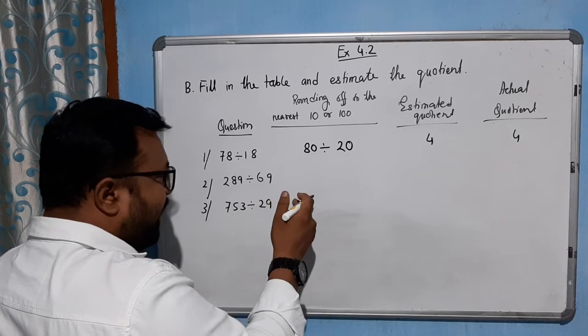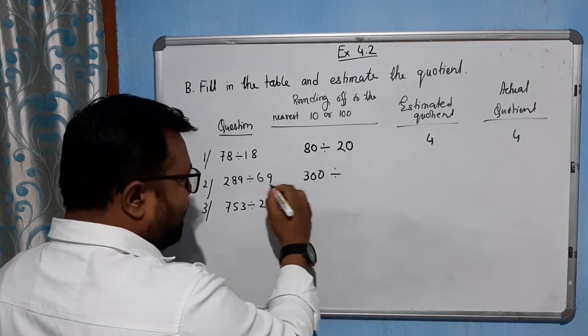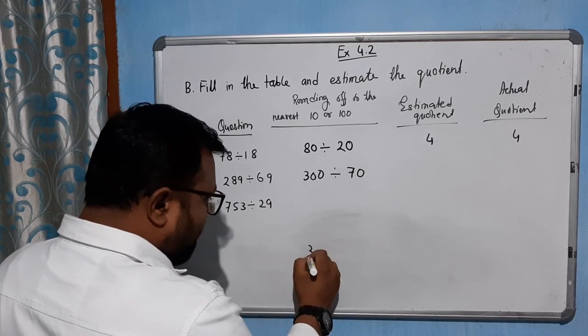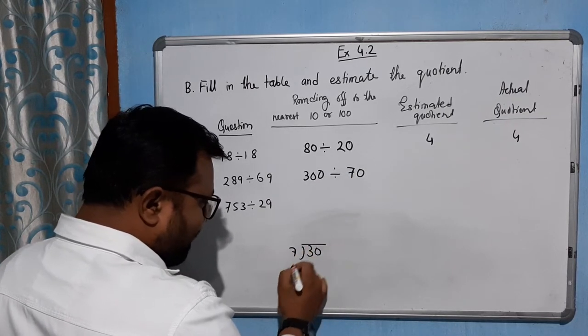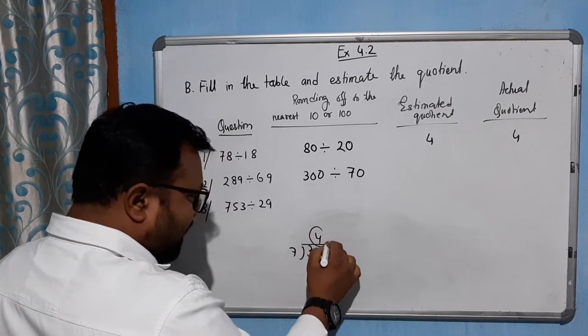289 is rounded off to nearest hundred, which is 300, divided by 69, which is 70. The zeros cancel, so 30 divided by 7. 7 times 4 is 28, so the estimate is also 4.